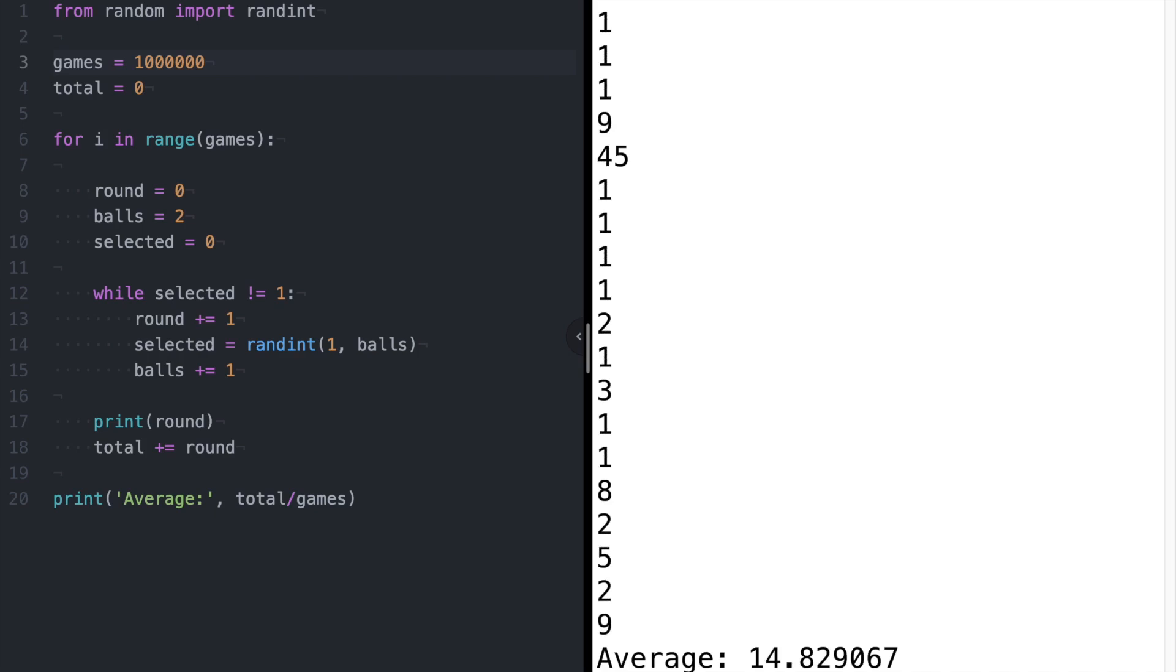Remember, all of the games we've been running are independent. Every time we restart, we go back to a single red and blue cotton ball. Moreover, every game is finite. We always eventually draw the blue ball. But despite that, the expected value seems to grow without bound.